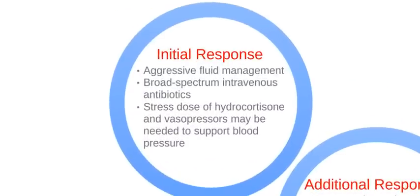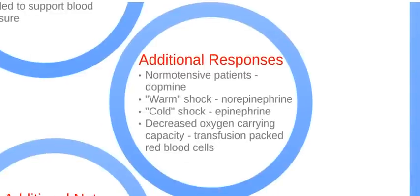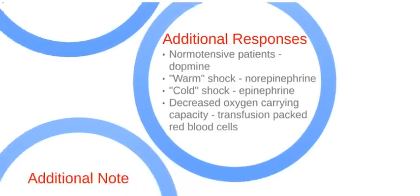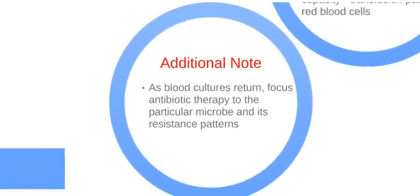The initial response in septic shock involves aggressive fluid management, broad-spectrum IV antibiotics, a stress dose of hydrocortisone, and vasopressors may be needed to support blood pressure. Administer dopamine to normotensive patients. For warm shock, utilize norepinephrine. For cold shock, administer epinephrine. If decreased oxygen carrying capacity is an issue, transfuse packed red blood cells. As blood cultures return, focus antibiotic therapy on the particular microbe and its resistance patterns.